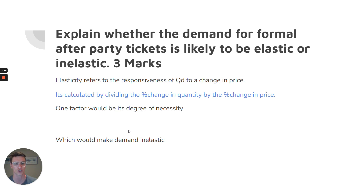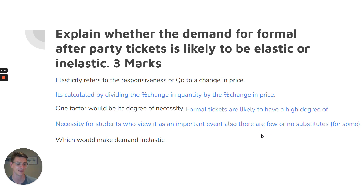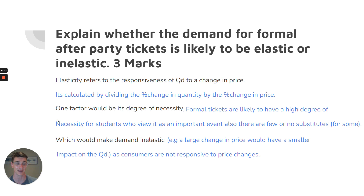To add weight to your definition, show that elasticity is calculated by dividing the percentage change in quantity over the percentage change in price. For the degree of necessity, you must state whether it's high or low. Formal tickets are likely to have a high degree of necessity for students who view it as an important event. You could also note there are no substitutes for formal after-party tickets — going home to bed may be a substitute for some. Finally, link it clearly: this makes demand inelastic, meaning a large change in price would have a small impact on quantity demanded, because consumers are not going to be responsive to those price changes — it's a necessity with a high degree of necessity.